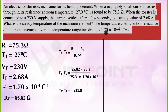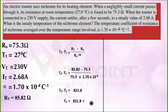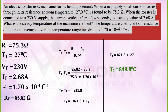T₂ − T₁ = 821.8 is the change in temperature. We need to find the steady temperature T₂ after applying 230 volts. So T₂ = 821.8 + T₁ = 821.8 + 27 = 848.8°C. Therefore, the steady temperature of the nichrome element is 848.8 degrees Celsius.